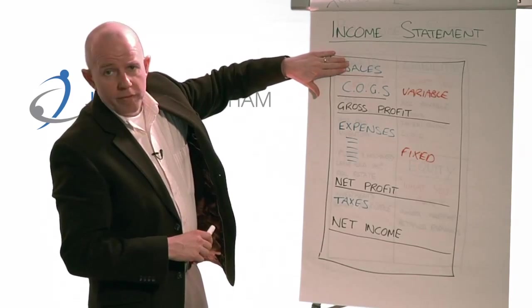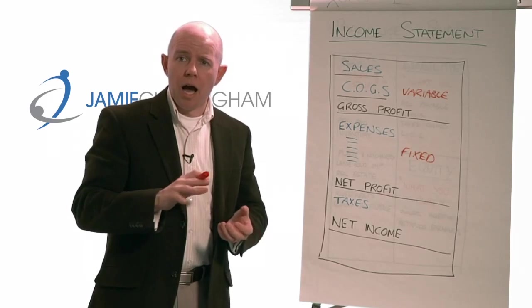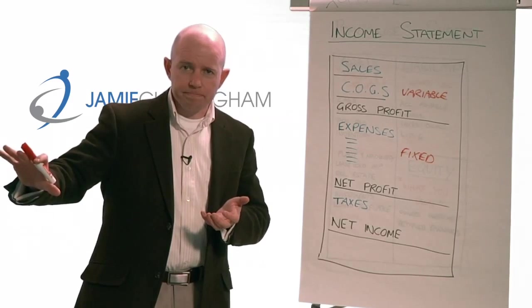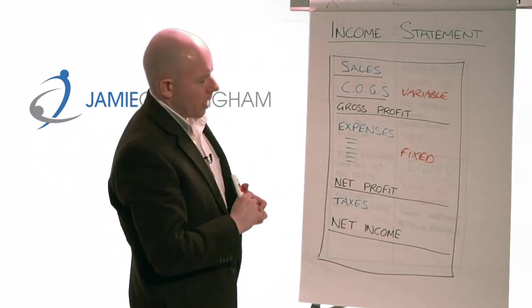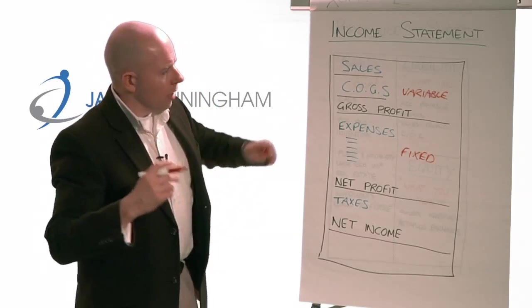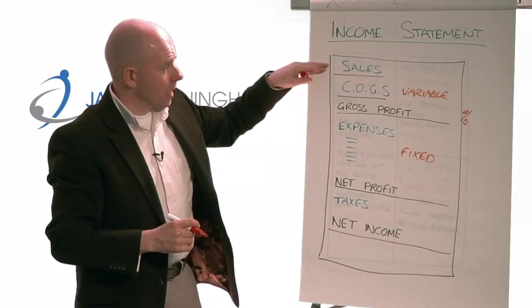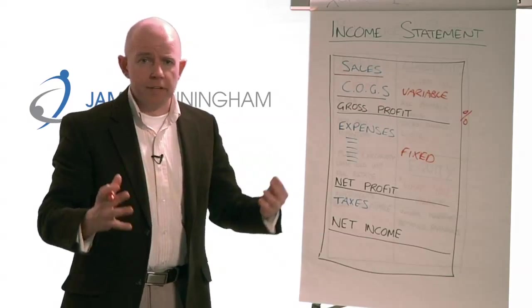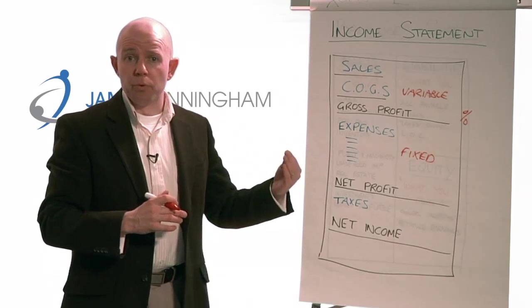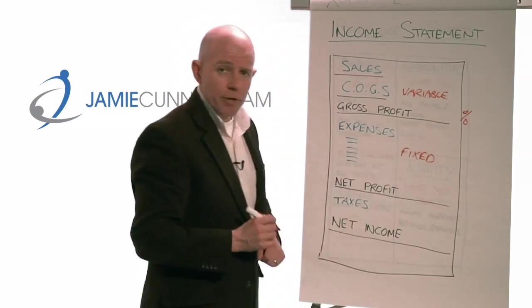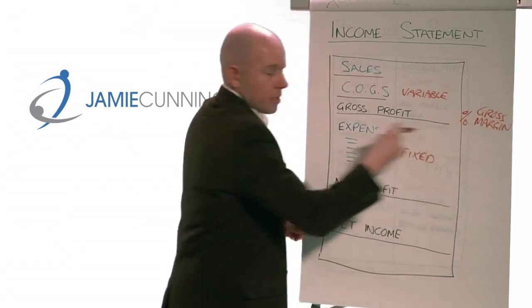Once you take your sales or revenue and subtract your cost of goods sold, that gives you gross profit — the amount of money left over after you've paid all your variable expenses. Gross profit as a percentage of sales is an important ratio called gross margin. We want to know if we have 30%, 40%, 50%, 60% gross profit — and look to see if it's consistent. We want to improve our gross margin. Similarly, net profit as a percentage of sales is called net margin. There's a very big difference between the two.